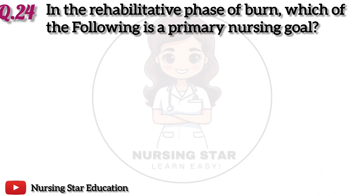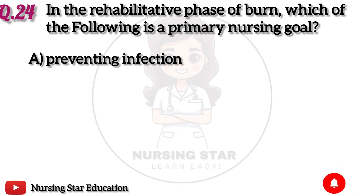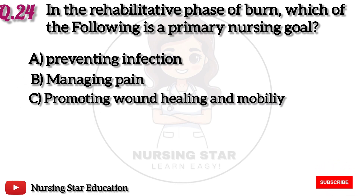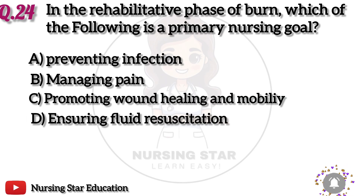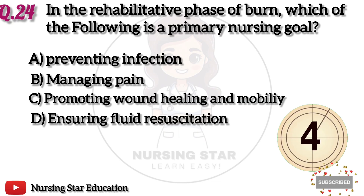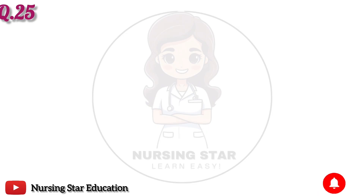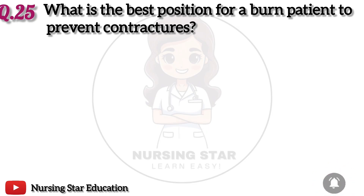Question 24: In the rehabilitative phase of burns, which of the following is a primary nursing goal? Option A: Preventing infection. B: Managing pain. C: Promoting wound healing and mobility. D: Ensuring fluid resuscitation. The correct answer is C: Promoting wound healing and mobility.